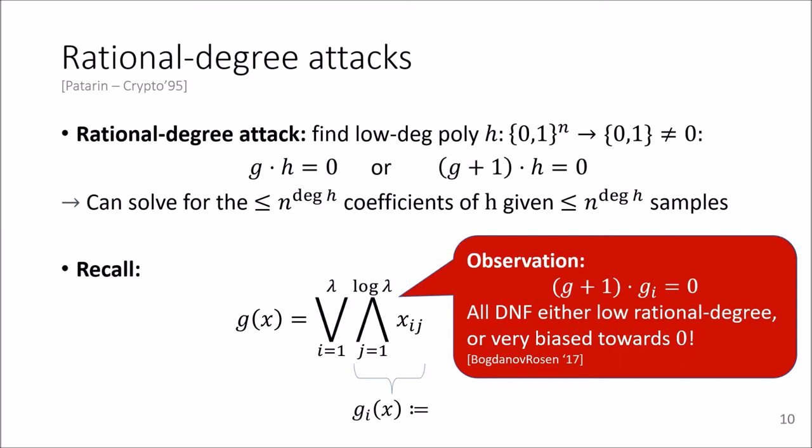Furthermore, this is inherent for DNFs, because either at least one of the ANDs has low fan-in, resulting in low rational degree, or the function is very biased towards zero, and the corresponding candidate could therefore be broken by a linear attack.